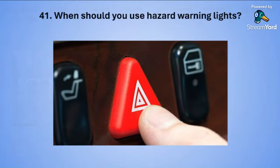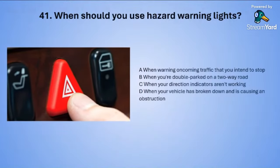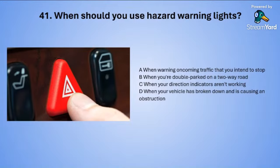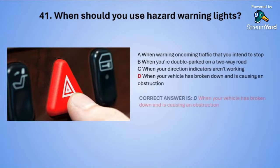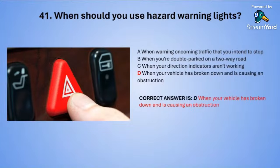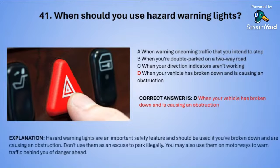Question forty-one: When should you use hazard warning lights? A: when warning oncoming traffic that you intend to stop. B: when you are double parked on a two-way road. C: when your direction indicators are not working. Or D: when your vehicle has broken down and is causing an obstruction. The correct answer is D — when your vehicle has broken down and is causing an obstruction.